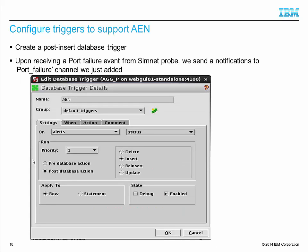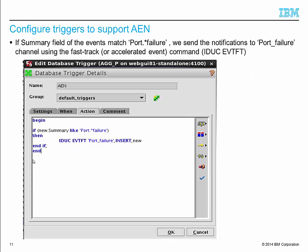In the example, we create a post-insert database trigger called AN to send the notification to the channel portfolio. We send the notifications to the portfolio channel using the fast-track command, if the summary field of the events matches 'port failure'.